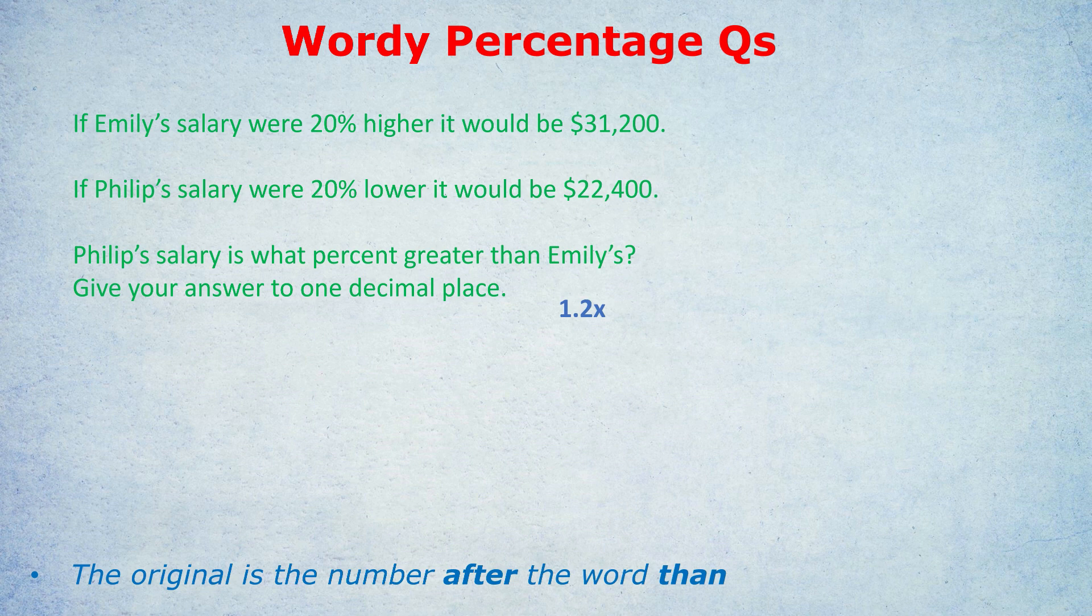So if we call Emily's salary x, remember, we're calling it x because we don't know what her salary is. Of course, if we knew the number, we'd put the number. We don't know what it is, so we have to make up a letter here. You can do it without algebra, but that's when you've had much more practice. For now, let's just write out the equation every single time. If her salary was 20% higher, so 1.2x, it would be, the would be means equals. It would equal 31,200.